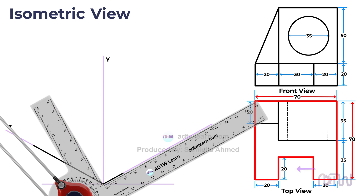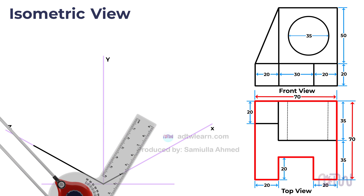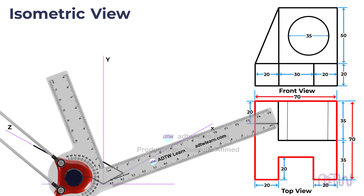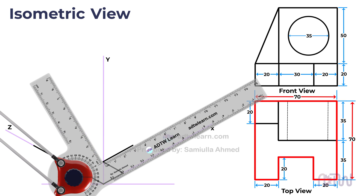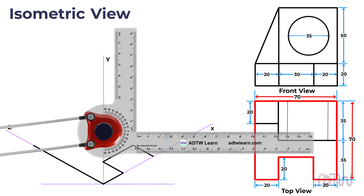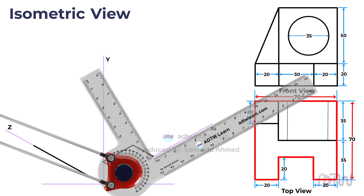We can observe that the depth of the slot is also 20 millimeters, so draw a 20 millimeters line parallel to the z-axis. Additionally, the width of the slot is 30 millimeters, so draw a 30 millimeters line parallel to the x-axis from the endpoint of the previous line.